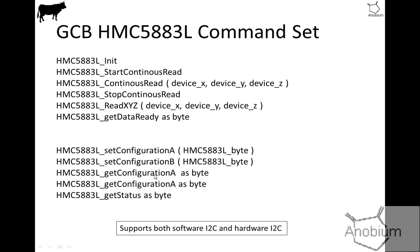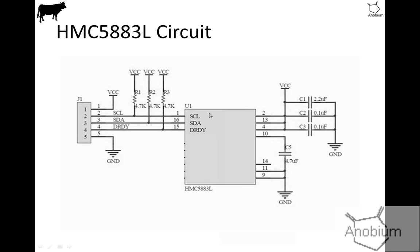As mentioned earlier, it supports software I2C and hardware I2C on the PIC and on the AVR. The circuit is relatively simple — there's a connector on here, you need to connect 5 volts or 3.3 volts and ground. It comes with onboard pull-ups. I've got this on a test rig here with other pull-ups as well and it's working very effectively. Interface J1 is what you need to be bothered about and it works extremely well.